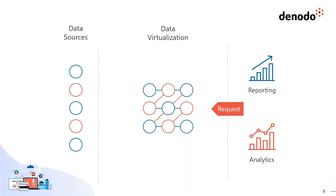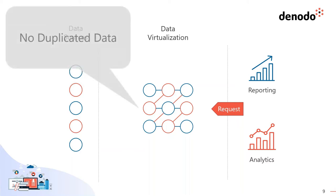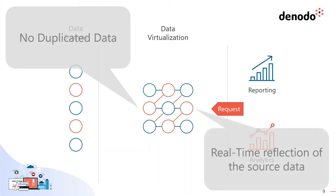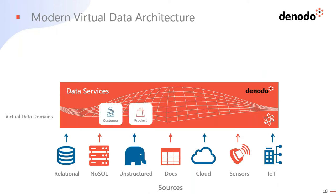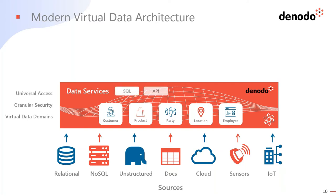Virtual data don't have a predefined data volume or predefined model. All data appear in our platform only when you query them, when you send the request to provide this data. The advantages of this approach are zero duplication — we are not moving the data — and a real-time reflection of the source data in this virtual layer.